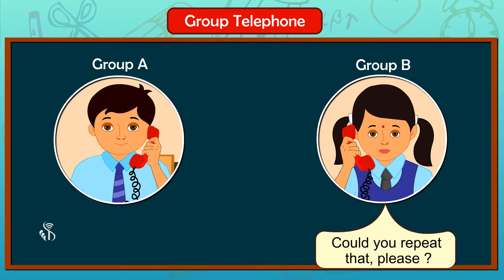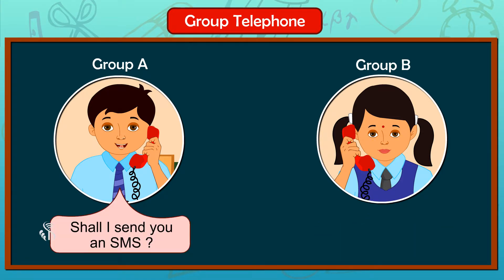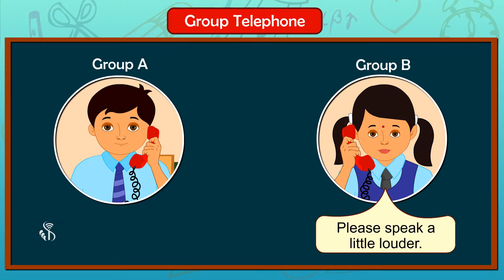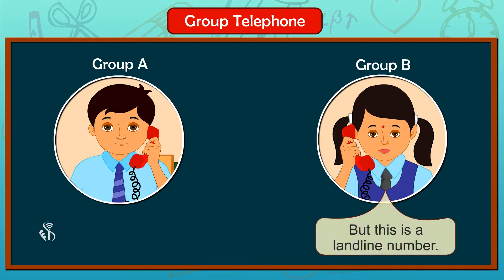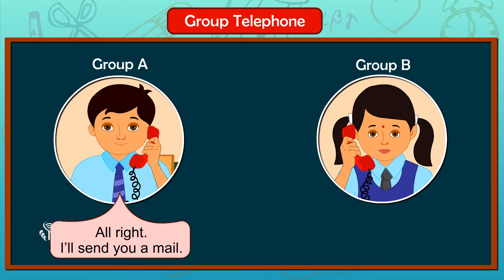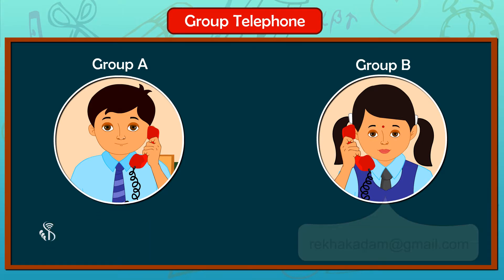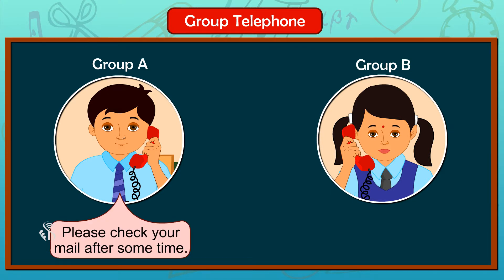Cinderella. Sorry, I can't hear you properly. Please tell again. Shall I send you an SMS? Please speak a little louder. Wait, I will text the name to you. But this is a landline number. All right, I will send you a mail. What's your email address? rekhakadam@gmail.com. Okay, please check your mail.